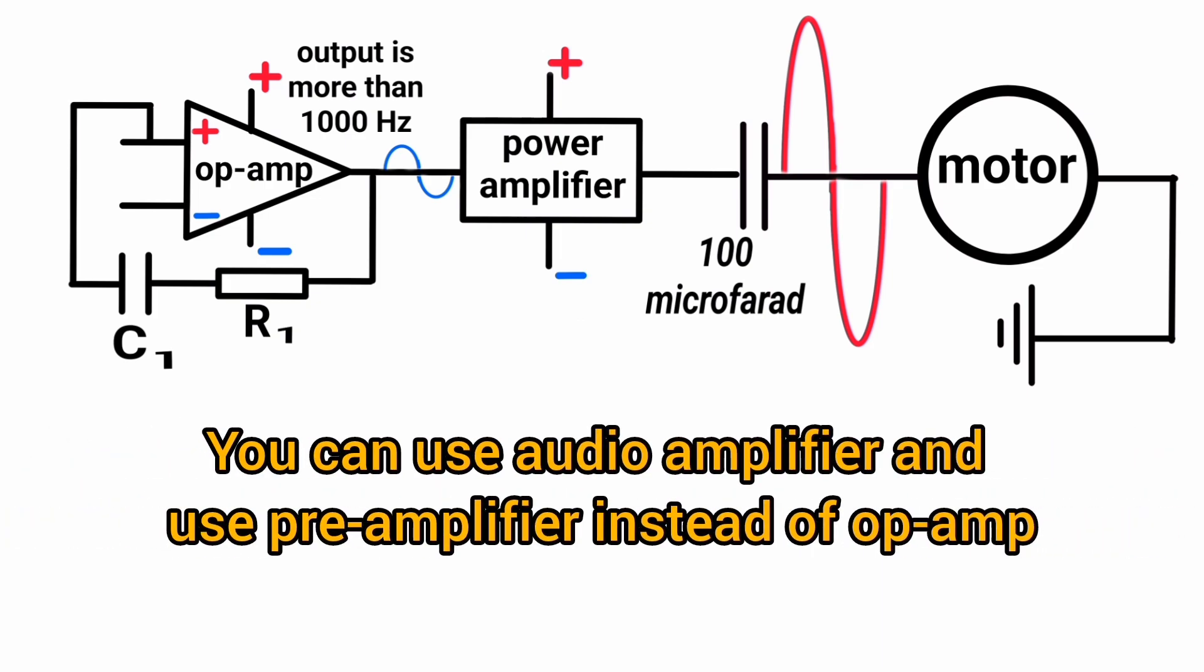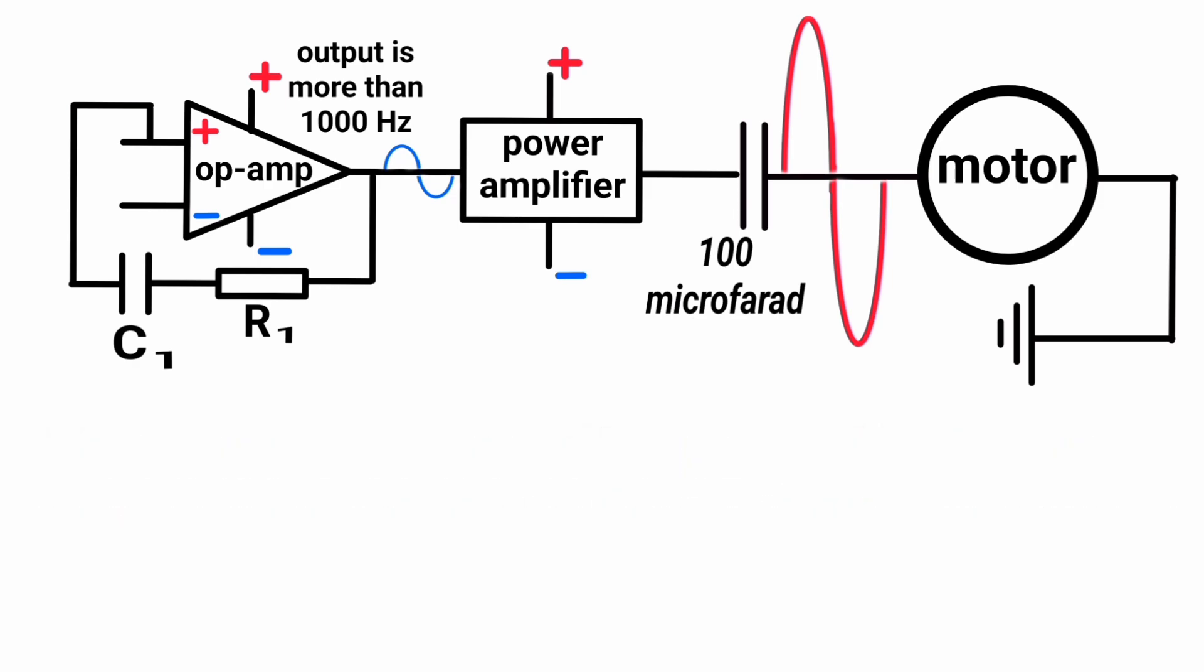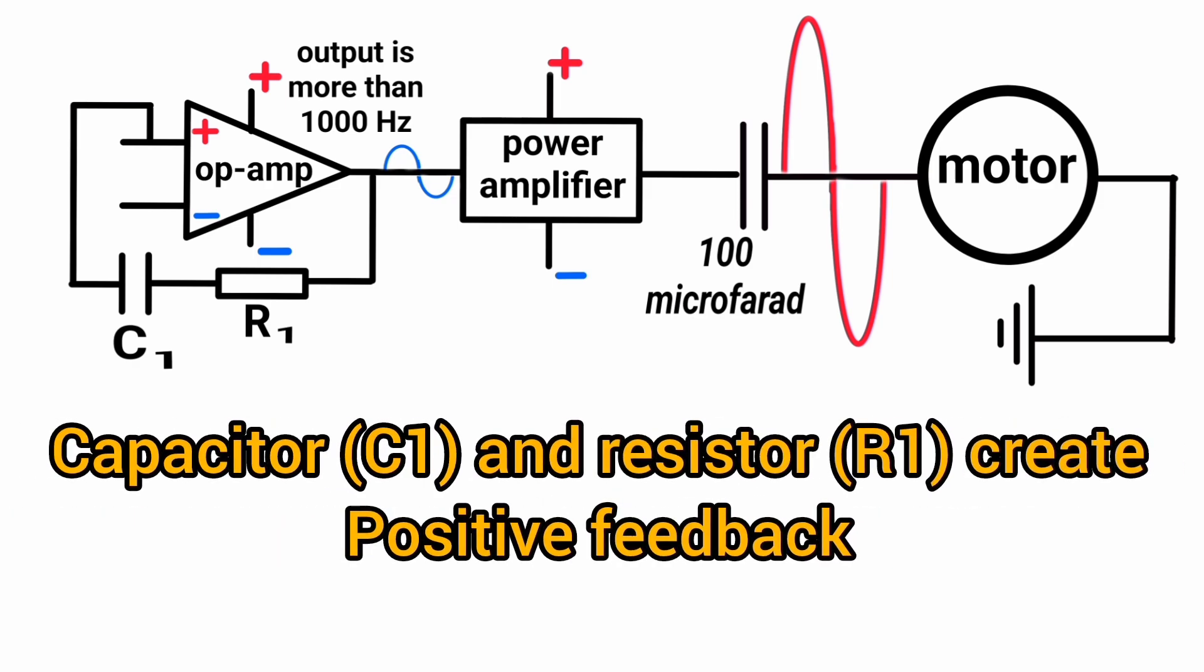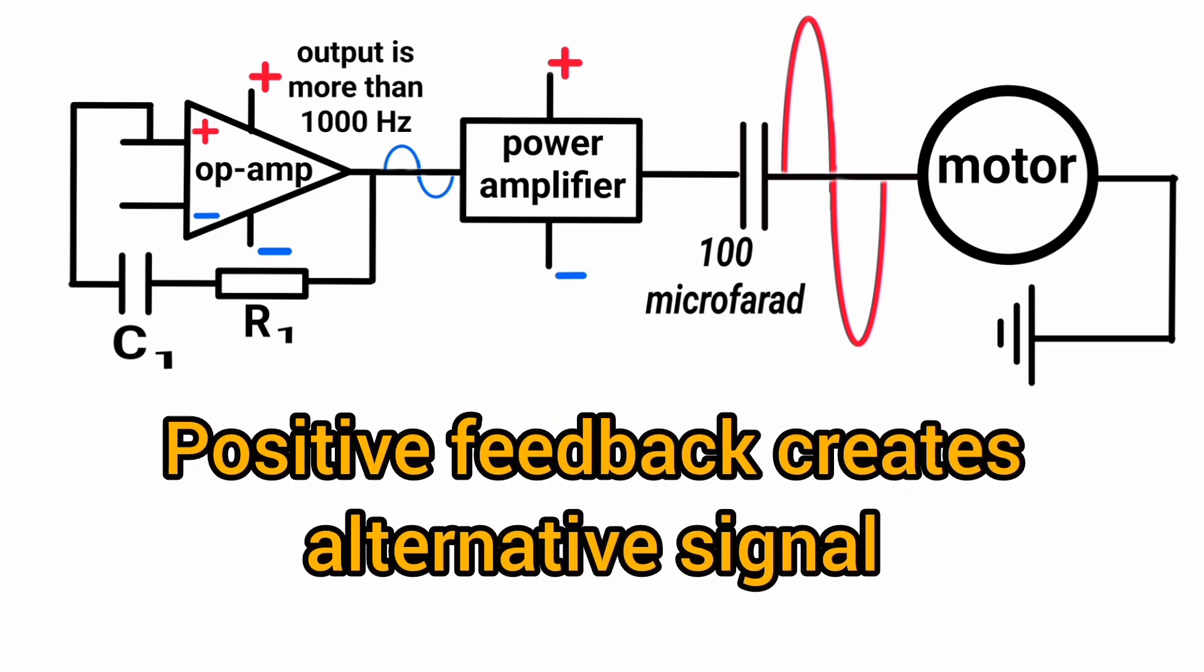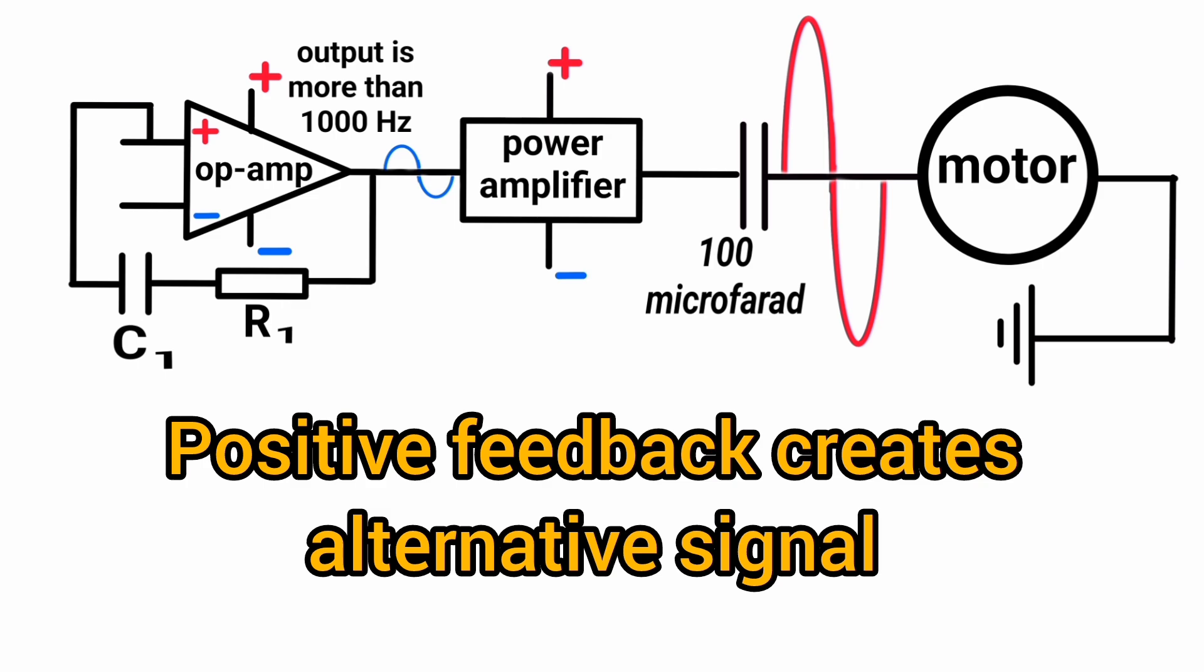You can use an audio amplifier and use a pre-amplifier instead of op-amp. Capacitor and resistor create positive feedback. Positive feedback creates an alternating signal.